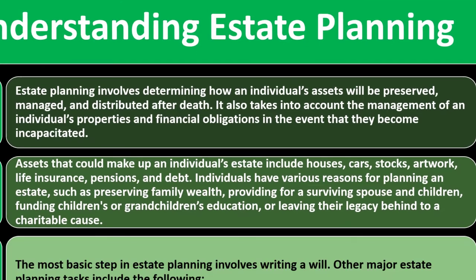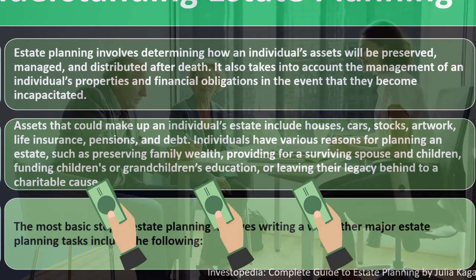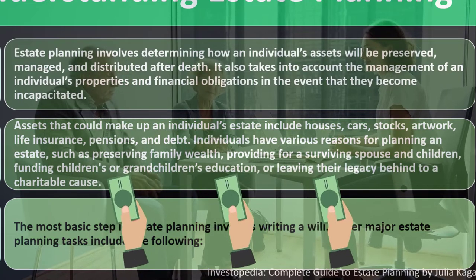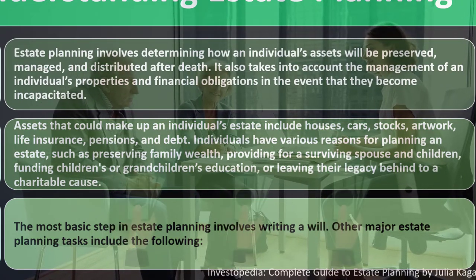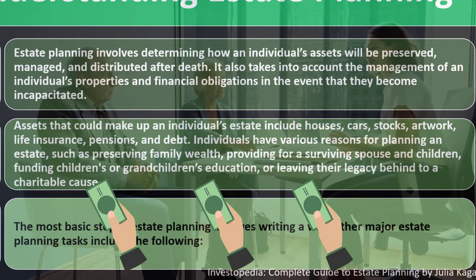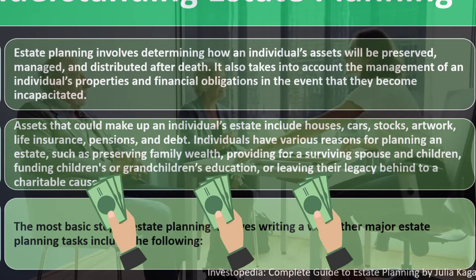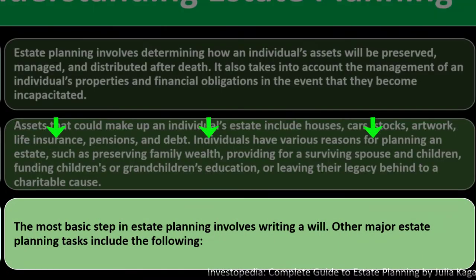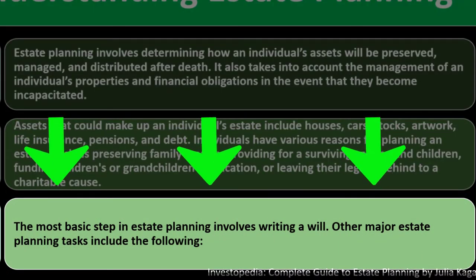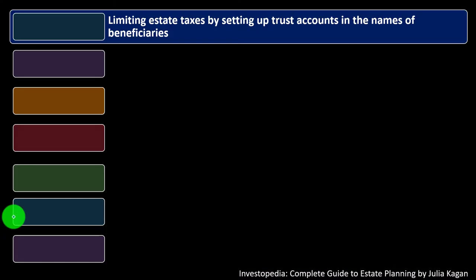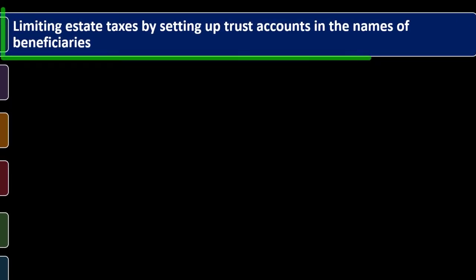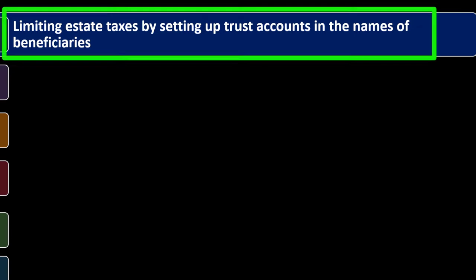Generally you want to give your money to people who can use it best — typically family — and if it's a choice between giving to a charity or giving to the government, choose a good charity. The most basic step in estate planning involves writing a will. Other major estate planning tasks include limiting estate taxes by setting up trust accounts and naming beneficiaries.